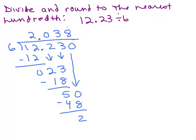So now I can round. Now, 8 is 5 or bigger. So this rounds up. So instead of 2.03, it'll be 2.04. So it's approximately 2.04.